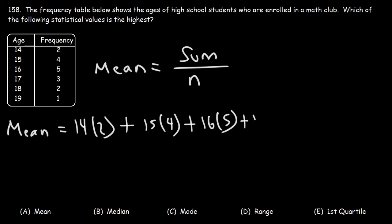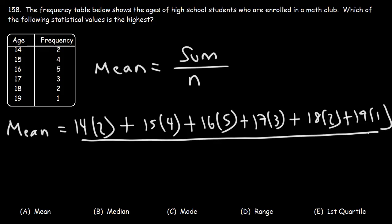Next, it's 16 times 5, and then 17 times 3, plus 18 times 2, plus 19 times 1. Now, we need to divide it by the total number of students in this club, which is the sum of the frequency column.